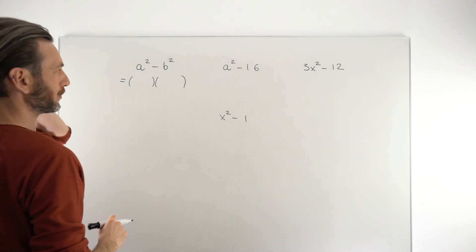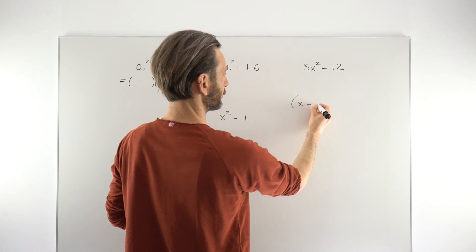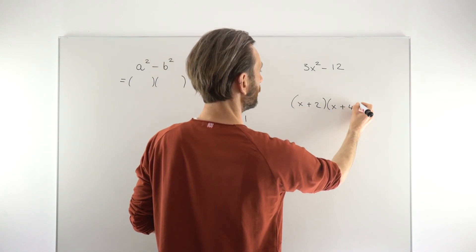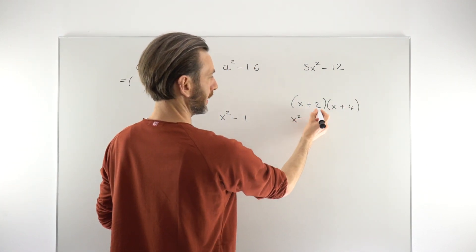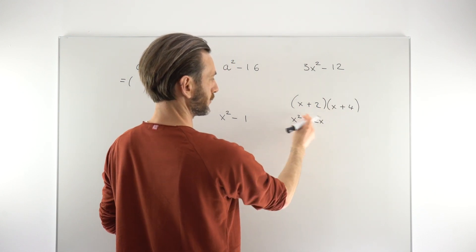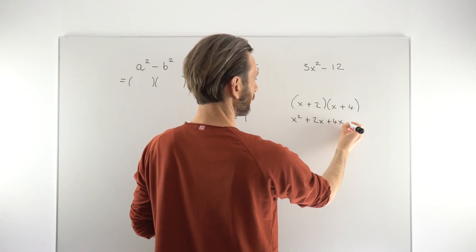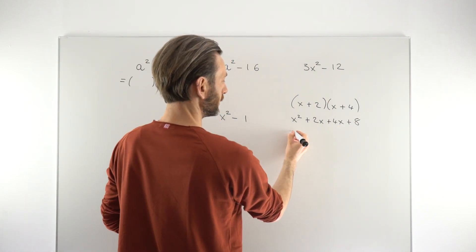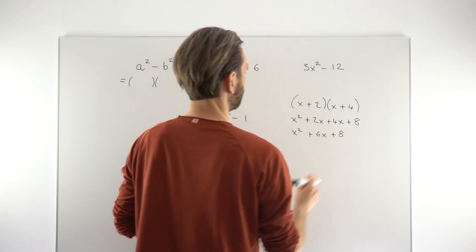Remember when you're multiplying out brackets, if you had say (x+2)(x+4), you do x times x to give x², then 2x, then x times 4 to give 4x, and 2 times 4 to give 8. You combine the two middle terms and get x²+6x+8.